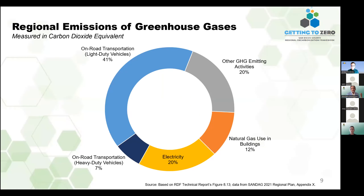Ahora que ya sabemos cómo estamos enfocando este trabajo, ¿qué es lo que estamos tratando de conseguir? Tengo aquí este cuadro para ayudarnos a visualizar los tipos de emisiones que estamos tratando de reducir a través de la región. Estos son todos los gases producidos en esta región. Los mayores contribuidores son el transporte y los vehículos de alta transportación, que también cuentan por el 80% de todas las emisiones.